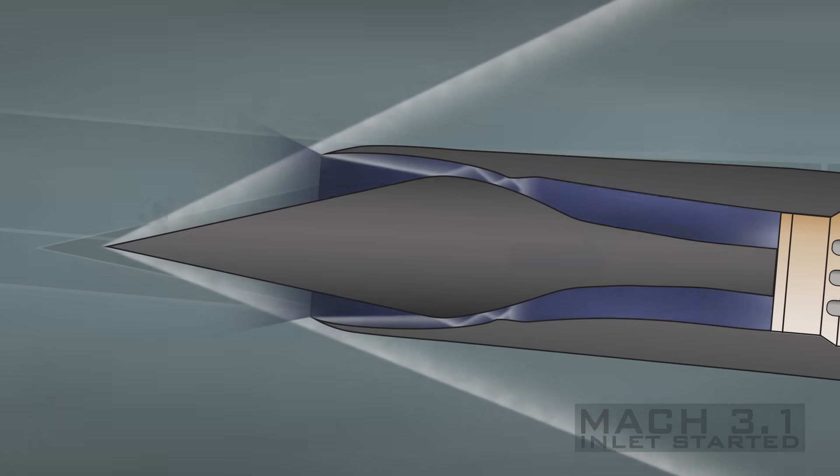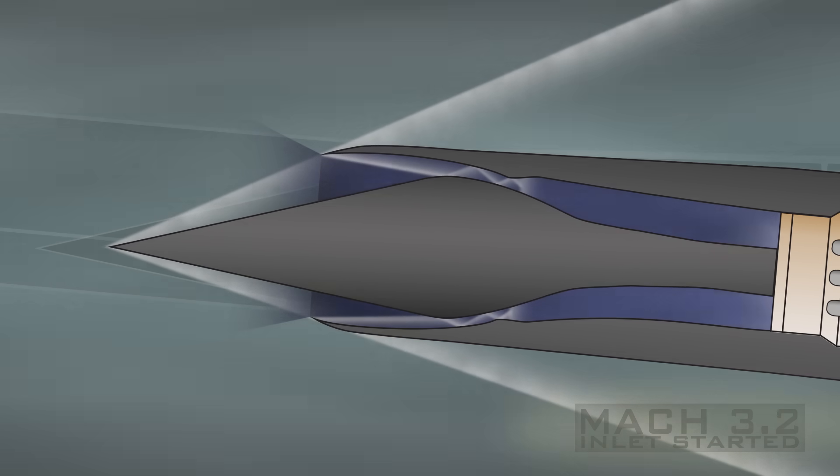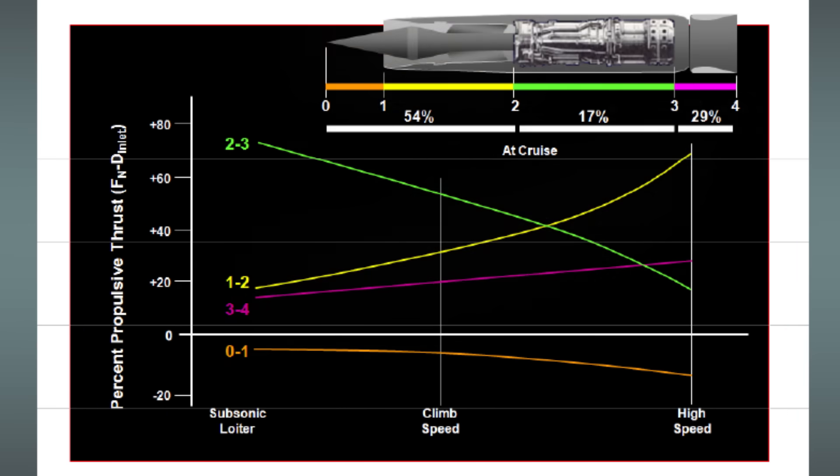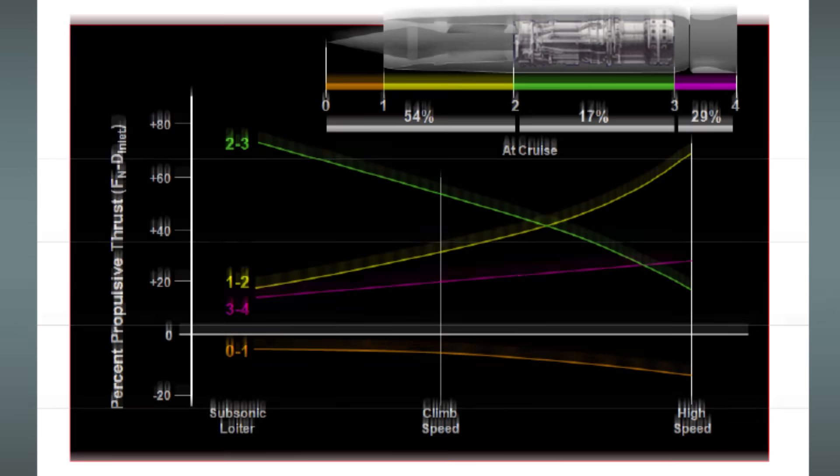When the plane reaches its cruising speed of Mach 3.2, the external shockwave is positioned directly at the inlet's lip, called the cowl, and the inlet spike is retracted 26 inches. It's at this speed that the J58 turbo ramjet has its maximum fuel efficiency, with the pressure recovery at the inlet doing most of the air compression work for the afterburner.